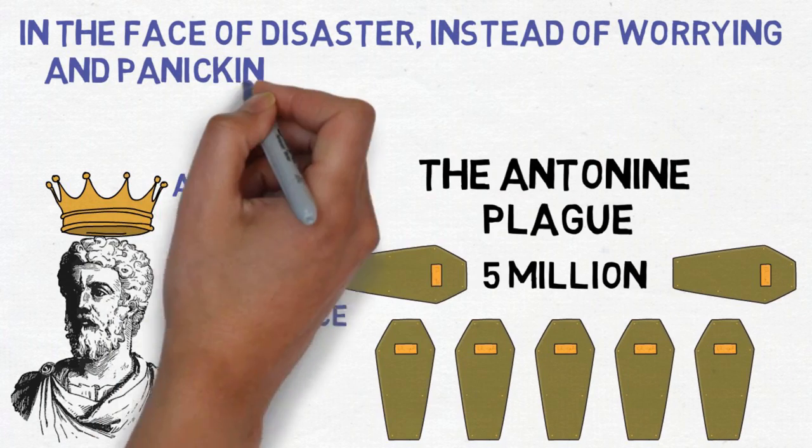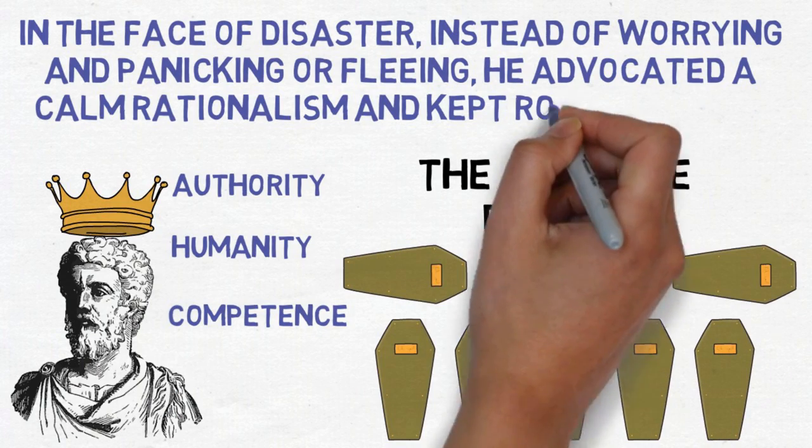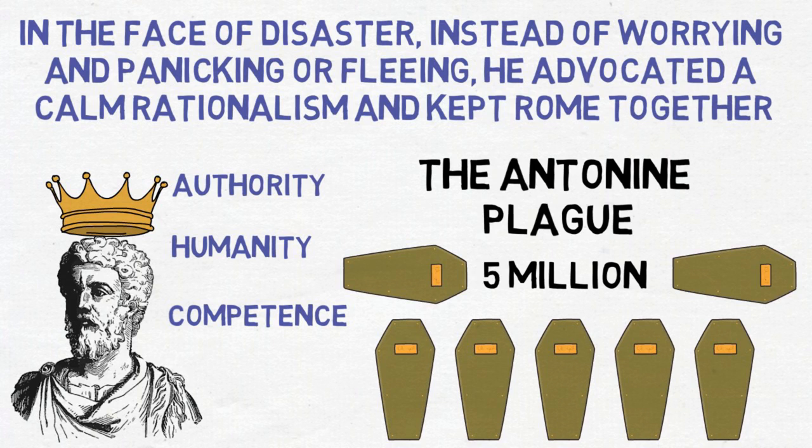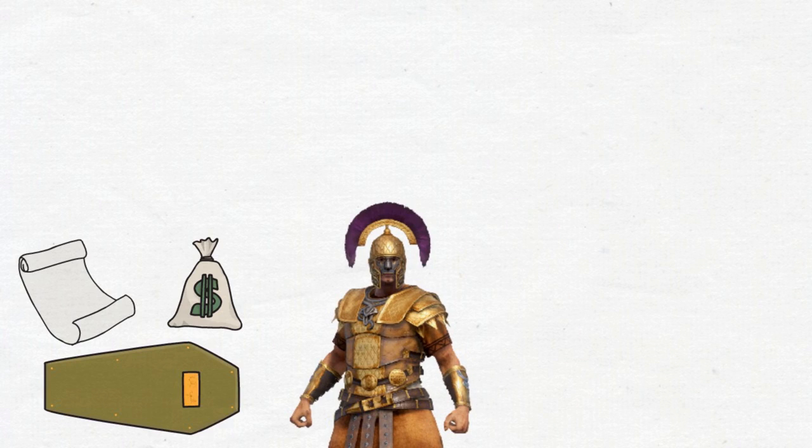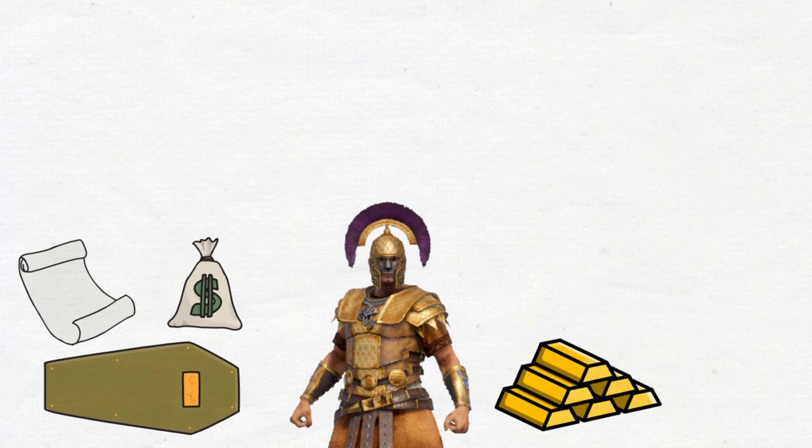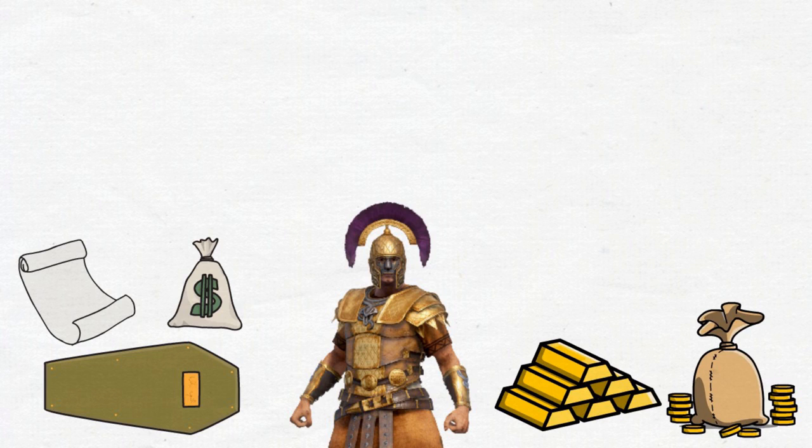In the face of disaster, instead of worrying and panicking or fleeing away like the other wealthy officials, Aurelius advocated a calm rationalism and kept Rome together. He passed legislation subsidizing the cost of funerals to keep bodies from piling up in the streets. When the army was short on recruits, he conscripted gladiators. When the army could not pay the cost of new soldiers needed to replace the dead, he sold off his imperial possessions to finance the effort.